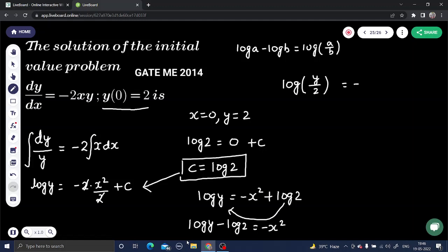And its value is equal minus x square. e is log, log x. If base a is here, exponential form x equals to a power b. y by 2 equals to e power minus x square. y to here is 2 e power minus x squared.